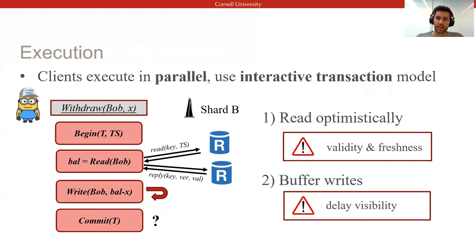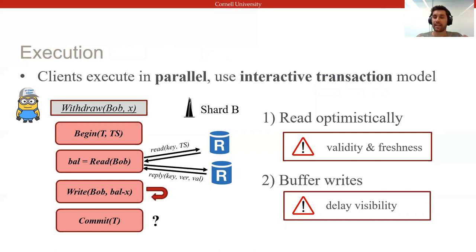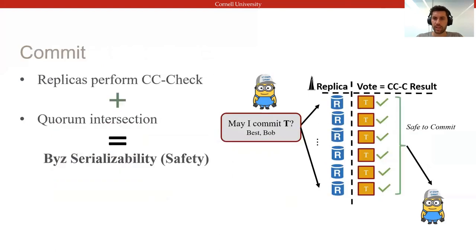Since speculative executions performed by clients in parallel might not actually be serializable, we need to explicitly validate them in order to commit. To do so, clients submit their completed transactions to replicas in all involved shards, who then vote on the local safety of the execution by running a concurrency control check.